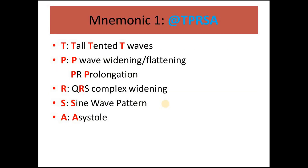To remember all these ECG changes, you can use the mnemonic TPRSA. T is for tall tented T waves. P is for P wave widening or flattening. The second P is for PR prolongation. R is for QRS complex widening. S is for sine wave pattern. And A is for asystole.